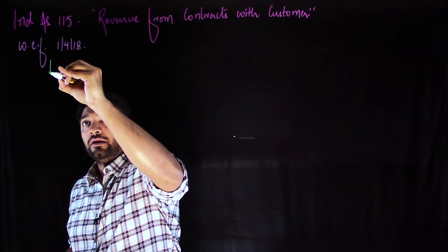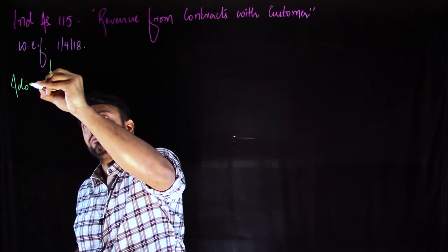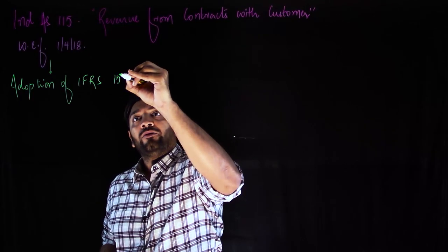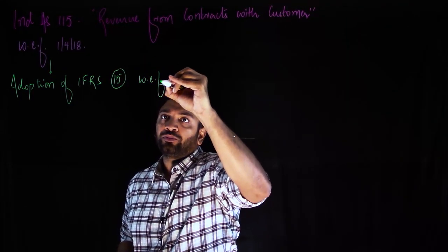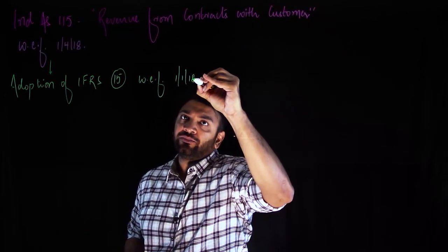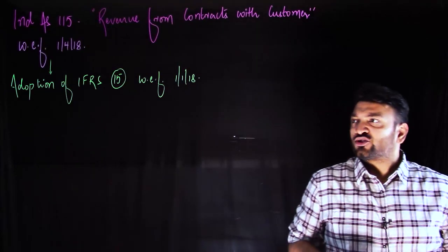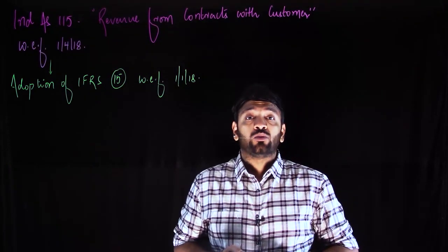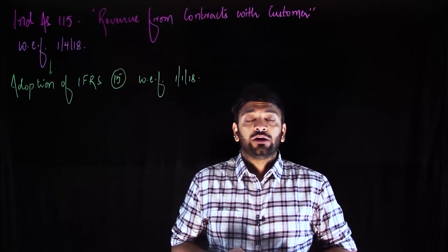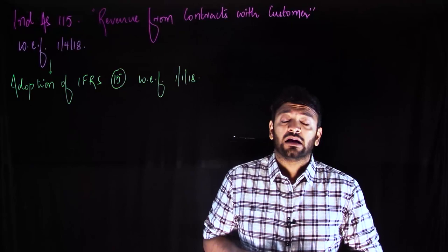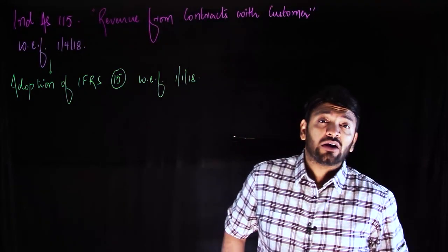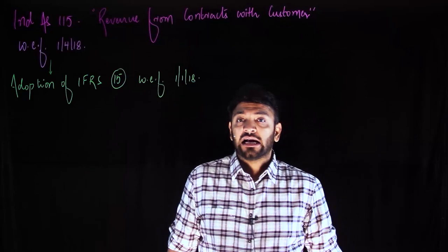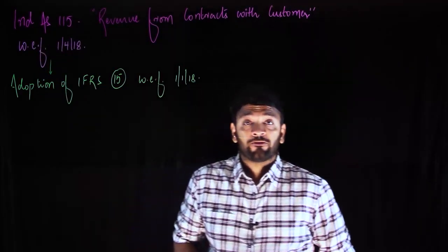Ind AS 115 is a direct adoption of IFRS 15, effective from 1st January 2018. There is a long history behind IFRS 15 — it was supposed to be introduced in 2016, issued on 26th February 2016, but was withdrawn a year later. It was reintroduced and made mandatory from 1st January 2018, with India adopting it as Ind AS 115 with effect from 1st April 2018.